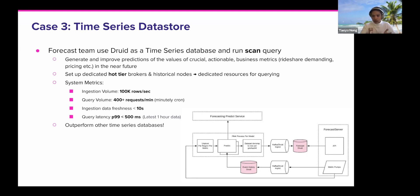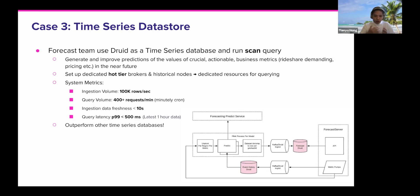Here are some system metrics: total ingestion volume is around 100K rows per second, query volume is around 400 requests per minute, and each request grabs the most recent hour of data for a specific region. Ingestion data freshness is less than 10 seconds, and query latency p99 is less than 500 milliseconds. Even though Druid is not famous for scan queries, we found that with proper setup the performance is pretty good — which is an interesting finding.